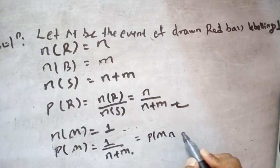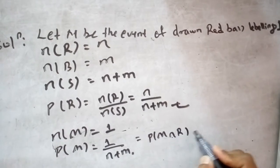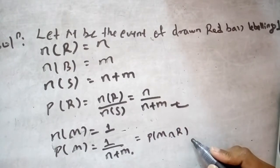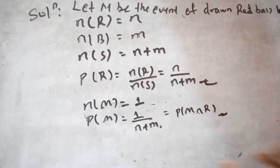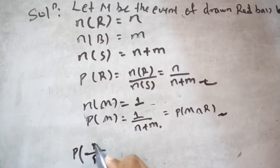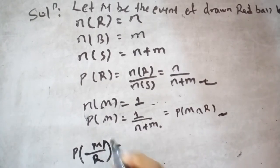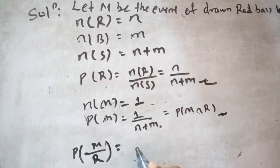Probability of M intersection R means the red ball labeled 1. Using conditional probability, probability of M given that it's a red ball, that's level 1.